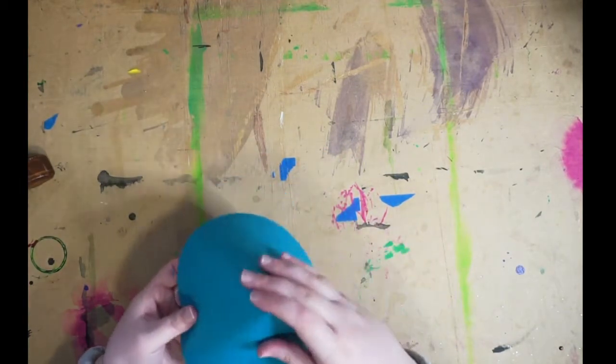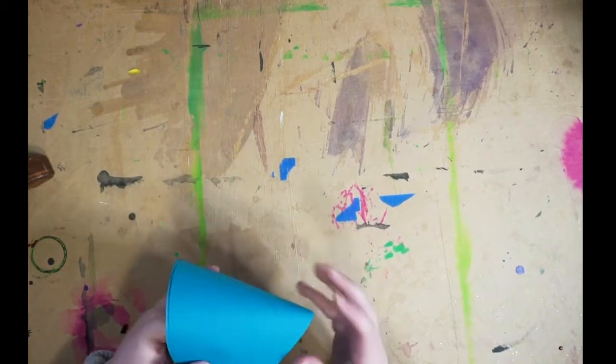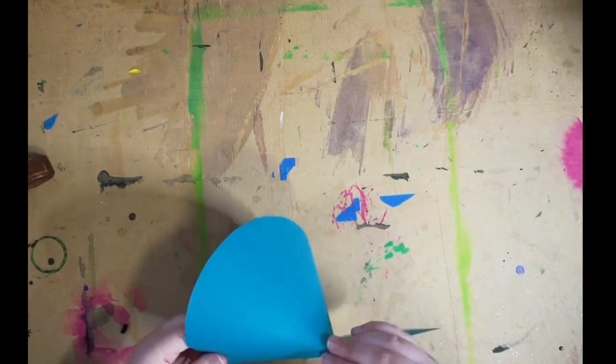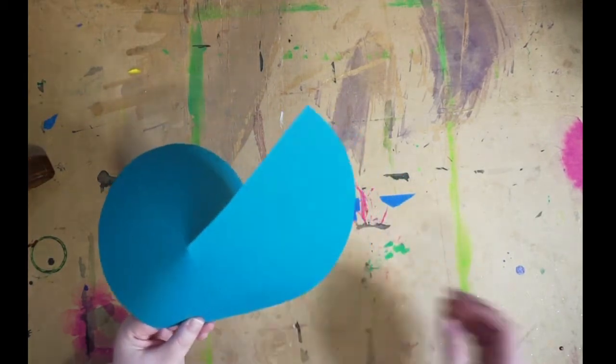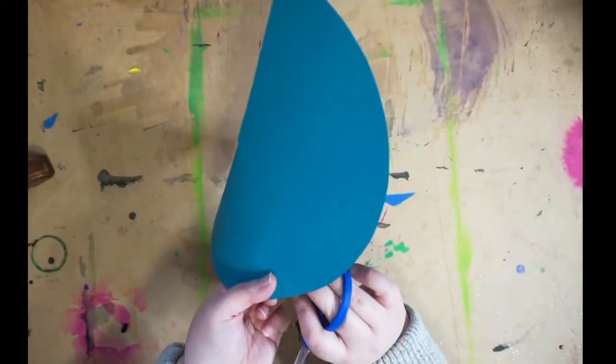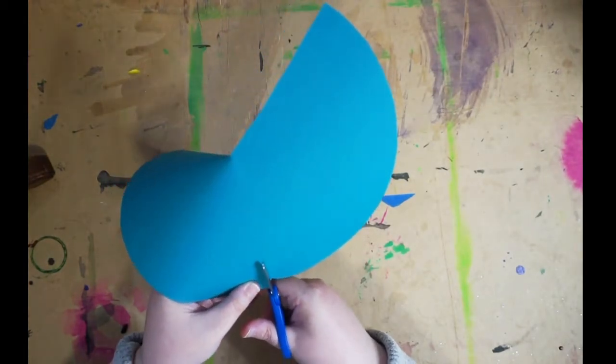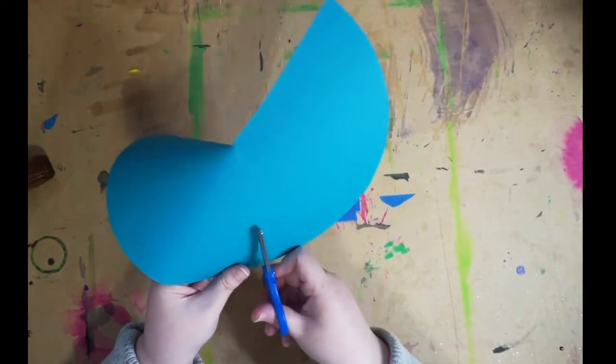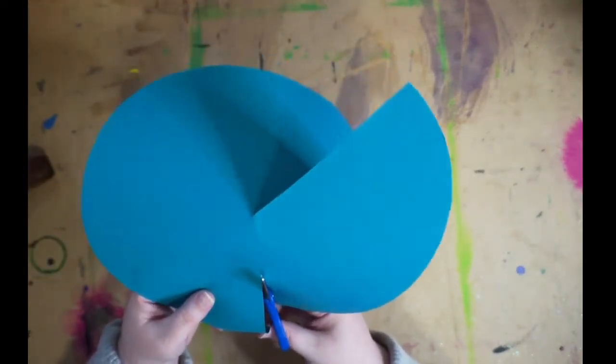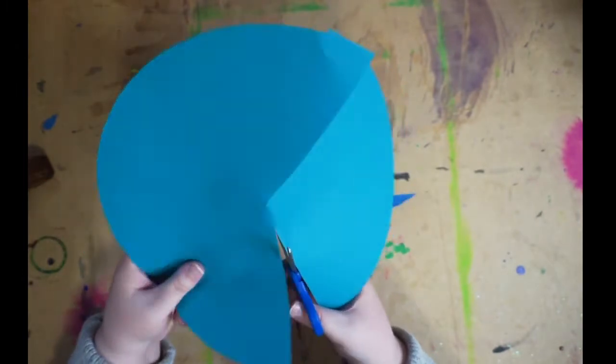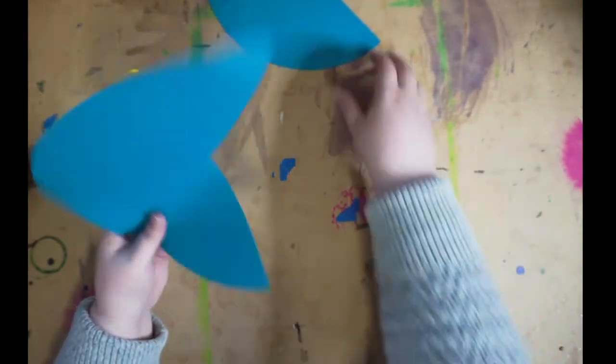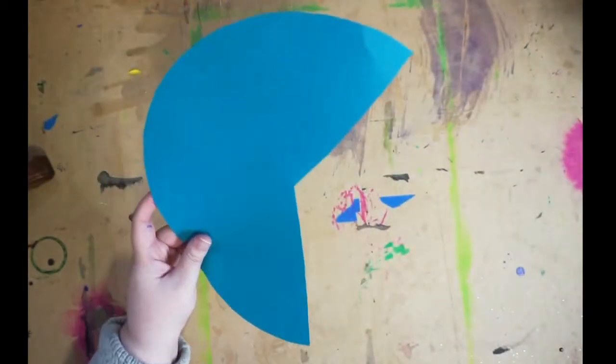So when you've got your cone kind of in the shape that you want there's going to be a lot of excess paper. What you're going to do is just kind of eyeball it and then make sure that there's a bit of overlap so that you can glue this together later. And just cut a second line.